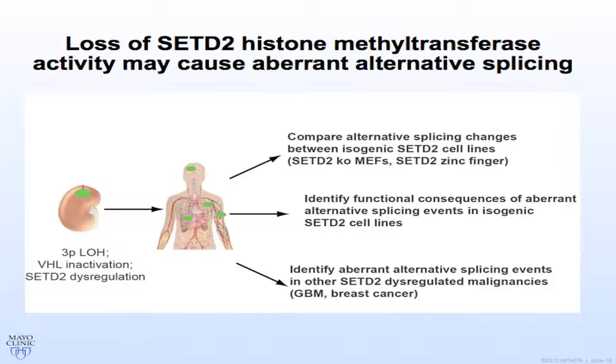We're also working within the precision medicine clinic at Mayo Clinic, where patients undergo whole exome sequencing, RNA sequencing, and CGH. We are now optimizing ChIP sequencing to start in our first patient within one month, and looking at ChIP sequencing in frozen tissue in parallel. This would identify alternative splicing events in other SETD2-dysregulated malignancies — so far we've detected SETD2 mutations in glioblastoma and in a patient with breast cancer.